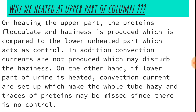Why do we heat the upper part of the column? This question is asked in various viva exams. This is because on heating the upper part, the proteins coagulate and haziness is produced, which is compared to the lower unheated part which acts as a control. In addition, convection currents are not produced, which may disturb the haziness. If the lower part of the urine is heated, convection currents are set up, which makes the whole tube hazy, and trace protein may be missed since there is no control. That is why the upper portion is heated in this test.